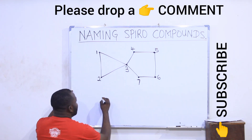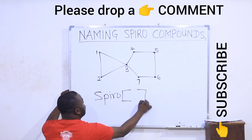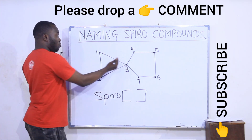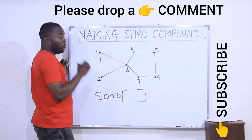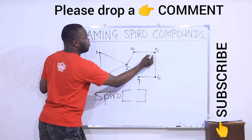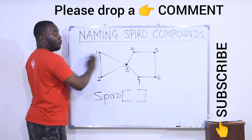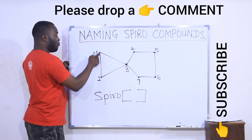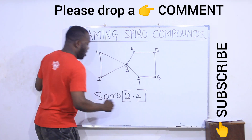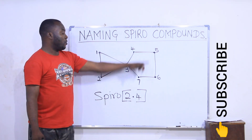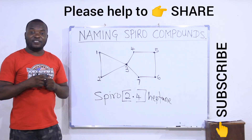How do I name it? First I write 'spiro' to show it's a spiro compound. Open my brackets and put the number of carbons for each ring side. The lower ring side has one, two carbons — that is two. The higher side has one, two, three, four — that is four. Remember, the central spiro carbon is not included for any side. So I have spiro[2.4], and the total carbons are seven, which is heptane. The name is spiro[2.4]heptane.